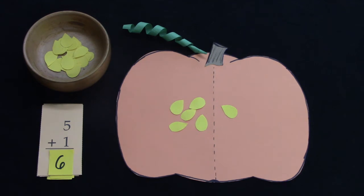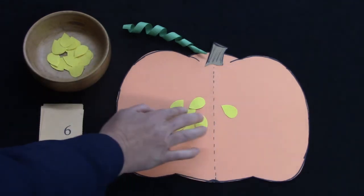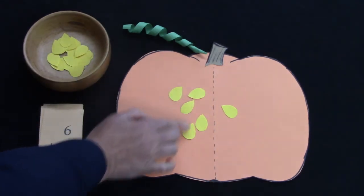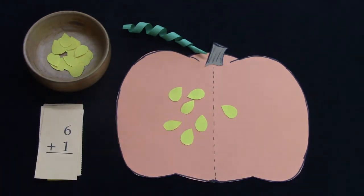What about six plus one? I'm going to put another seed. So I have one, two, three, four, five, six. It would be seven.